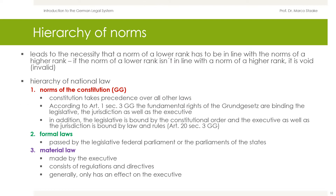The German legal system consists of a hierarchy of norms. The hierarchy of norms leads to the necessity that the norm of a lower rank has to be in line with the norms of a higher rank. If a norm of a lower rank is not in line with the norm of a higher rank, it is void — invalid. The norms at the top of the hierarchy are the norms of the Constitution, the Basic Law, the Grundgesetz. The Constitution takes precedence over all other laws.